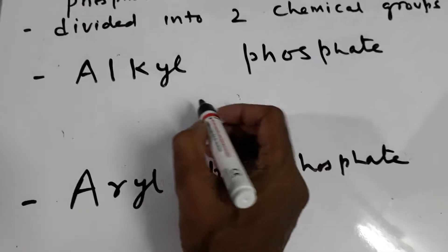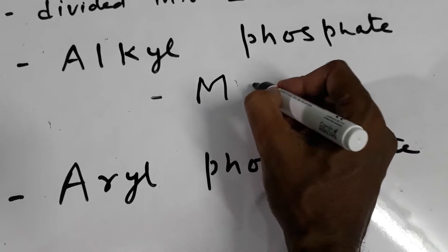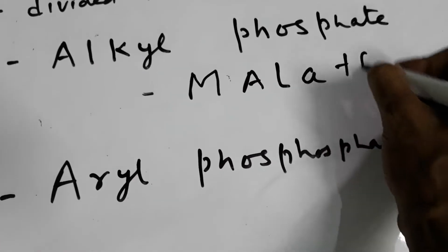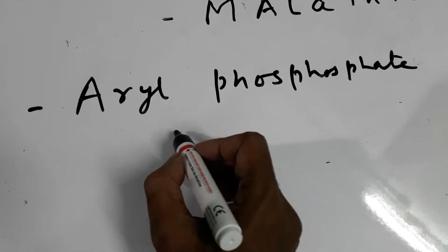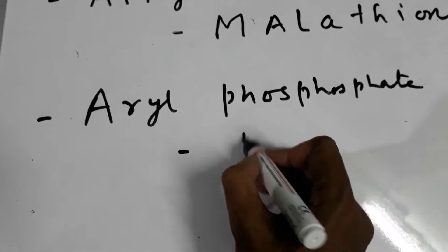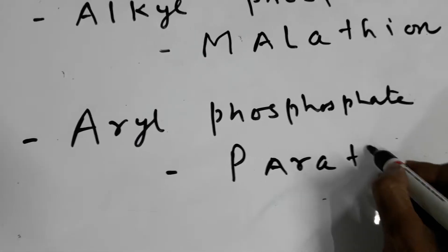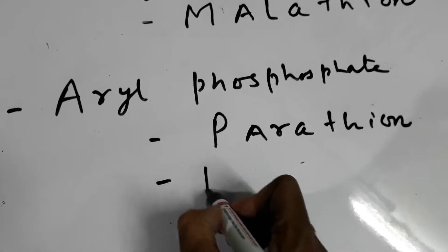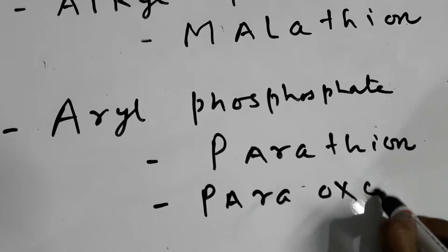In Alkyl-phosphate, one example is Malathion. And in Aryl-phosphate, one example is Parathion and Paraoxon.